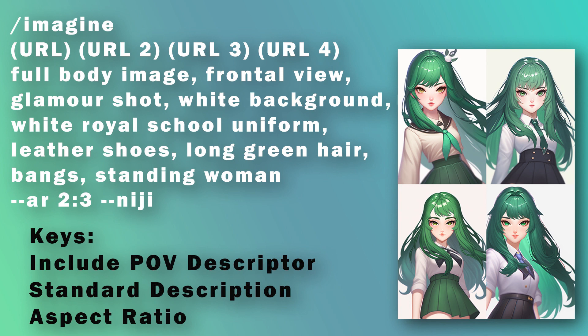What we're doing here is creating a reference image for a more full-body version of our character. Before it was just a headshot focusing on the face and creating expressions. Here we go with the body image. I didn't get a full body image and was content with this, but if you want hands, legs, and feet, use that as your reference image assuming it looks like your character. The important thing is to change the POV descriptor, keep a standard description of the character without adding expressions yet, and change the aspect ratio to 2:3 to create a portrait layout.